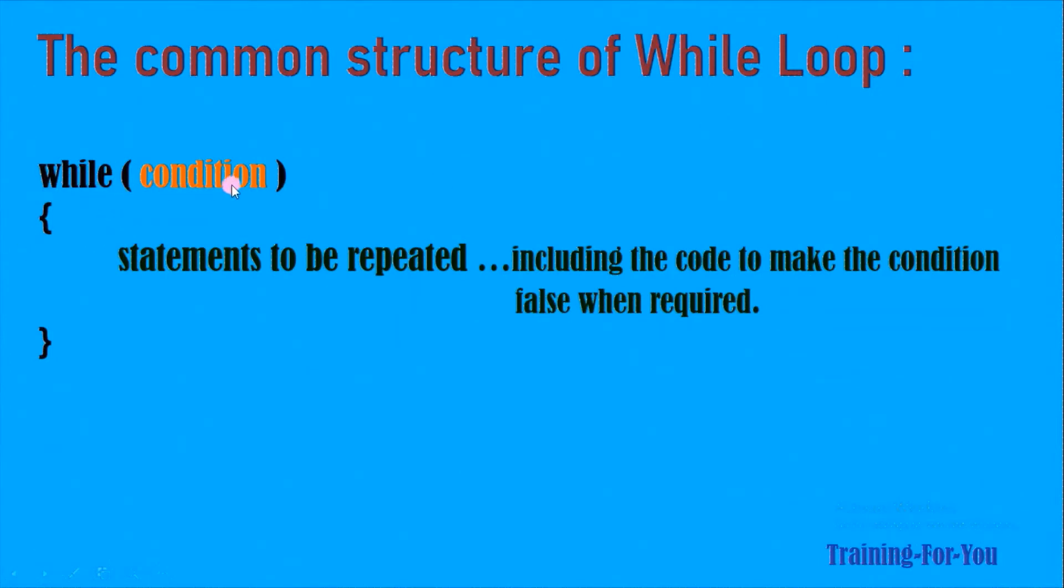As long as this condition remains true, the loop body goes on executing. So we need to have some code inside the loop body to make this condition false when we need.